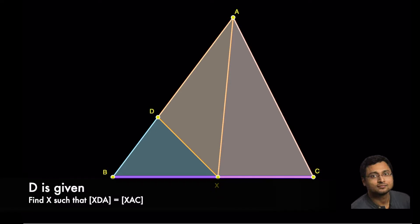Remember, D is given. We want to find X. How do we do it? Well, we will reverse engineer it in the sense, let's assume that we have already found X.